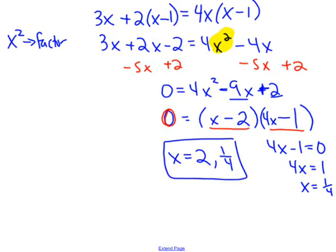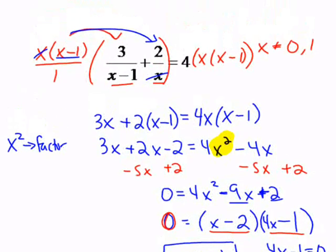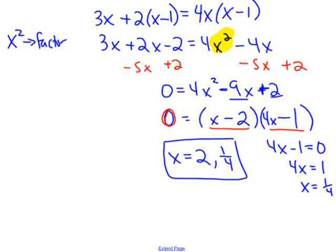Now once I have my answers, I do want to double check with my restrictions that I had at the beginning, which were x cannot equal 0 and 1. Well, we got 2 and 1 fourth, so that's okay. That's our solution.